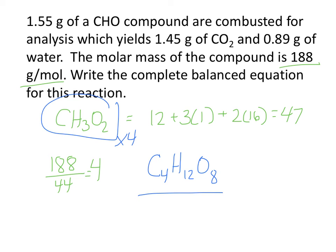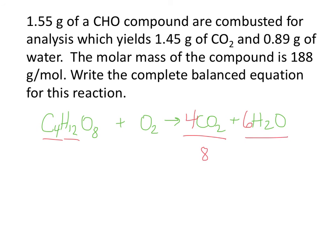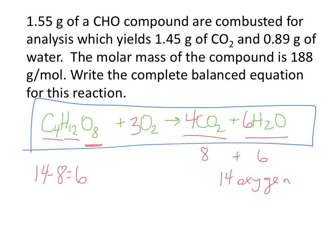Now we need to write the actual balanced equation. We have C4H12O8 plus O2 making CO2 plus water. For 4 carbons, we need 4 CO2s. For 12 hydrogens, we need 6 H2O to give 12 hydrogens. For oxygen on the right: 4 CO2s gives 8 oxygens, 6 waters gives 6 oxygens, totaling 14 oxygens. On the left, C4H12O8 already has 8 oxygens, so 14 minus 8 gives 6 oxygens needed from O2, meaning 3 O2. The final balanced equation is C4H12O8 + 3O2 → 4CO2 + 6H2O.